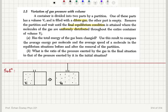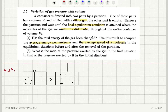Has the total energy of the gas been changed? Use this result to compare the average energy per molecule and the average speed of a molecule in the equilibrium situations before and after the removal of the partition. What is the ratio of the pressure exerted by the gas in the final situation to that exerted in the initial situation?